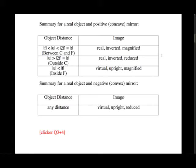For an object distance between the center of curvature C and the focal point F, the image will be real, inverted, and magnified. If the object is outside the center of curvature (farther from the mirror than C), the image will be real, inverted, and reduced. Finally, if the object is inside the focal length, you will have a virtual, upright, and magnified image.